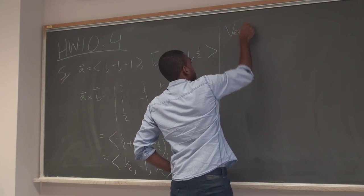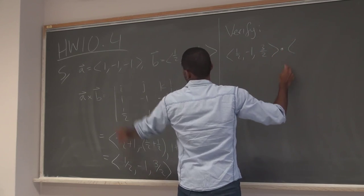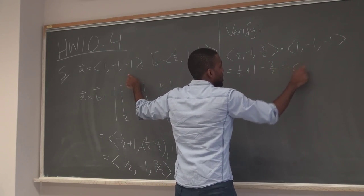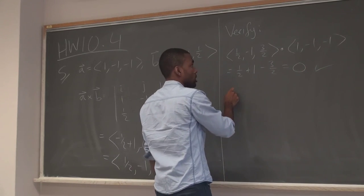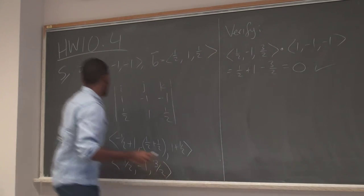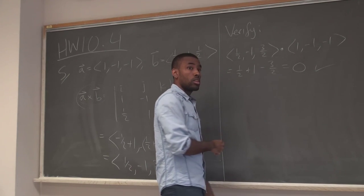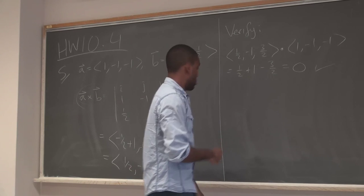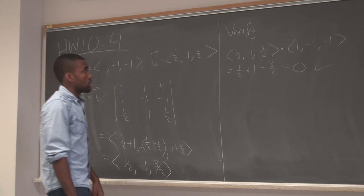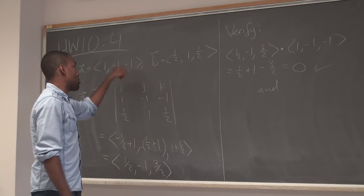Now you verify that you actually got the cross product correct. If you take (1/2, -1, 3/2) and dot it with the A vector (1, -1, -1), the result is 1/2 plus 1 minus 3/2, which is zero. So you know it's orthogonal. The cross product should be orthogonal to both vectors, so you have to dot product it with both this and that.